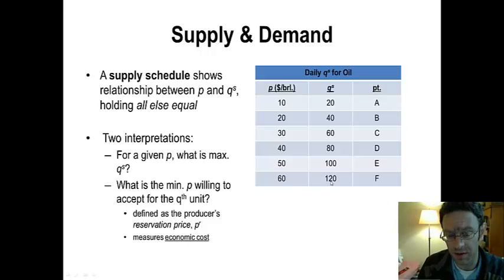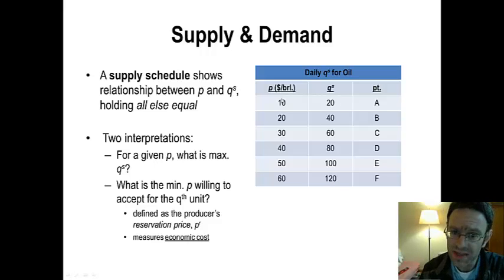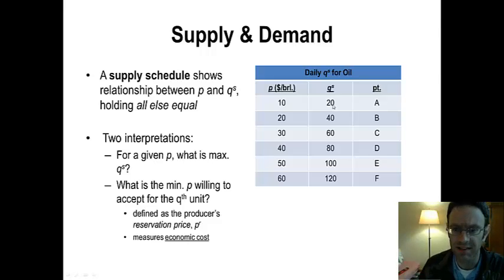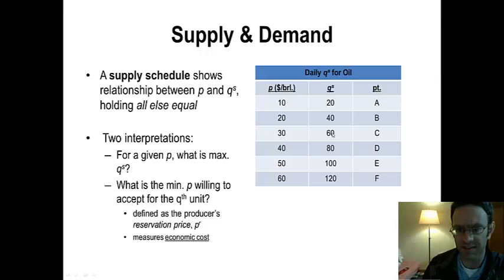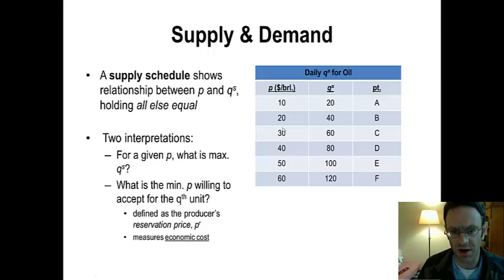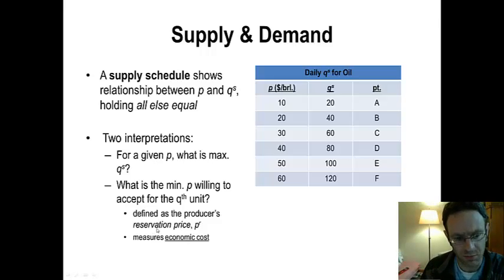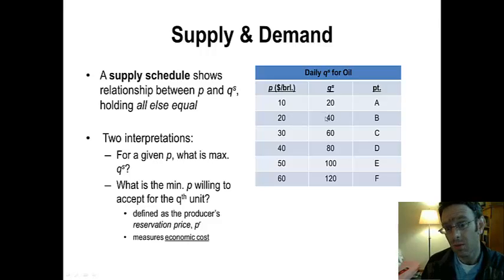Another way of interpreting what the supply schedule tells you is you start with quantity supplied and solve for price. The way that you should interpret this perspective is: what is the minimum price that sellers are willing to accept in order to sell the 20th barrel of oil? $10. What is the minimum price that sellers are willing to accept in order to supply the 60th barrel of oil? $30. That minimum price that sellers are willing to accept can be interpreted as the economic cost of production — oftentimes referred to as the reservation price for sellers. If it costs $20 to make that 40th barrel of oil, sellers would not sell it for less than $20.